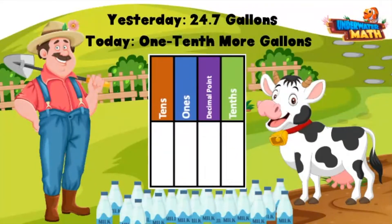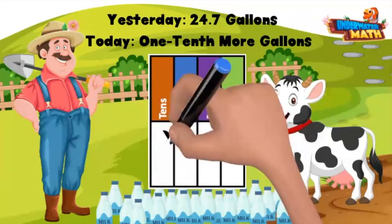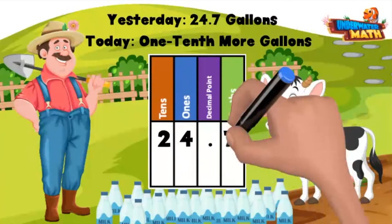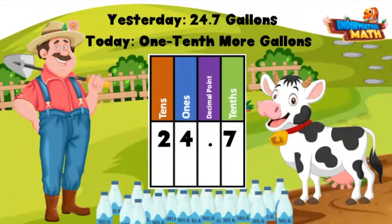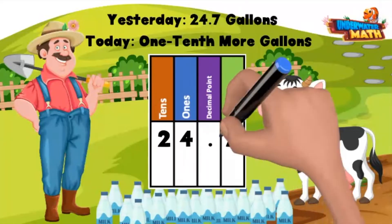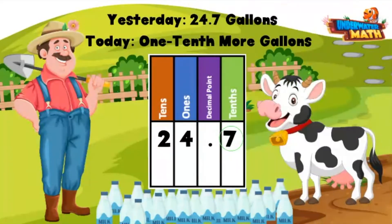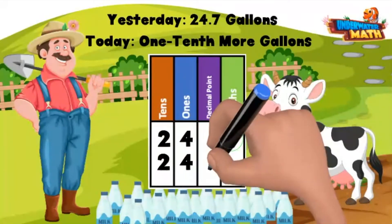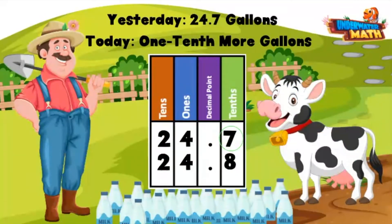When we are working on one tenth more and one tenth less, we really need to look at the tenths place in the number. If something is one tenth more, it means the tenths place is going to change by one. Here we have a seven in the tenths place — one tenth more is going to push that seven up to an eight. One tenth more than 24.7 is 24.8. Thanks for making all of that milk, Betsy!